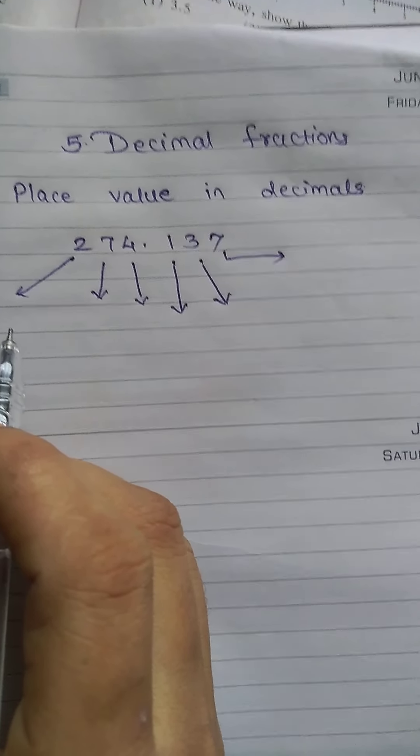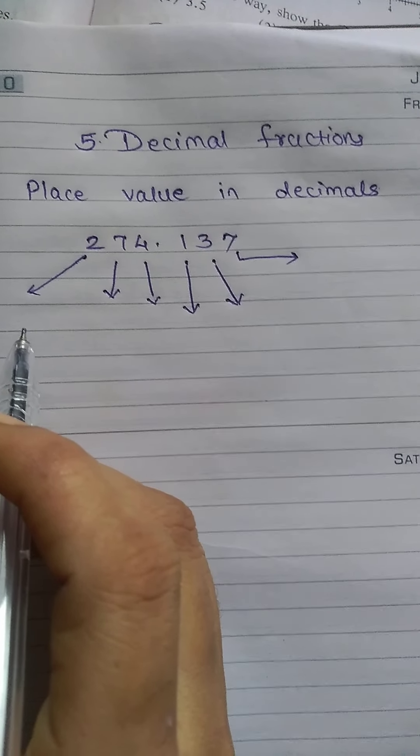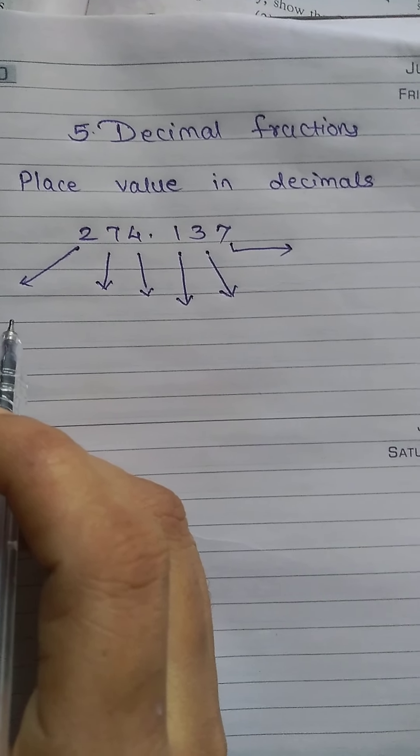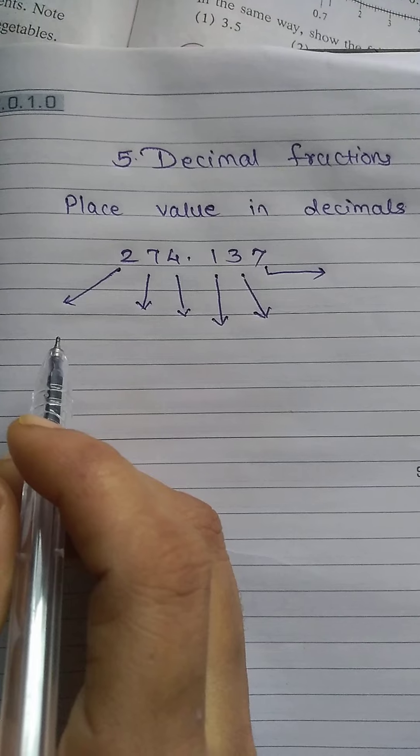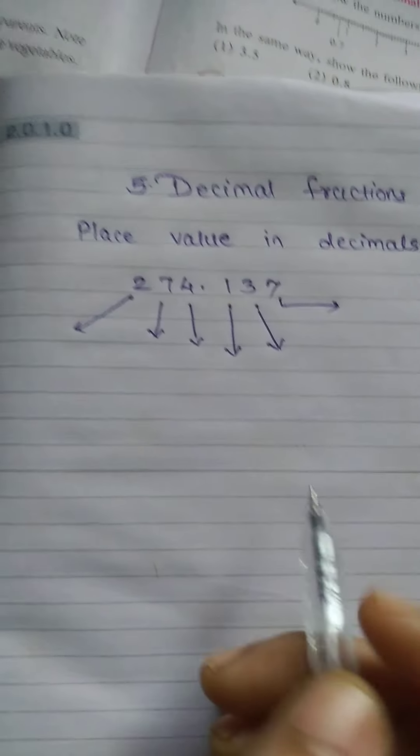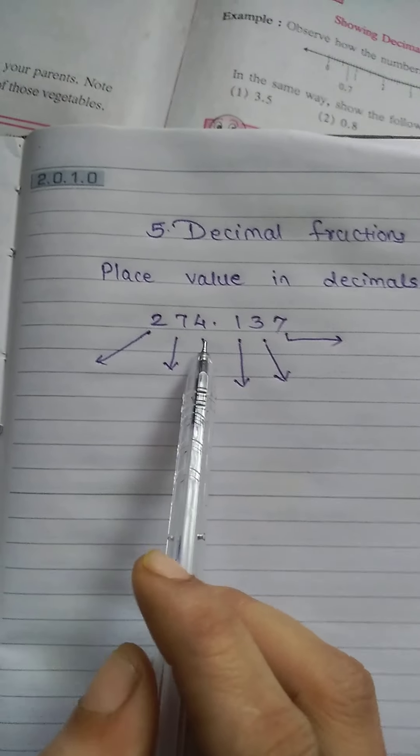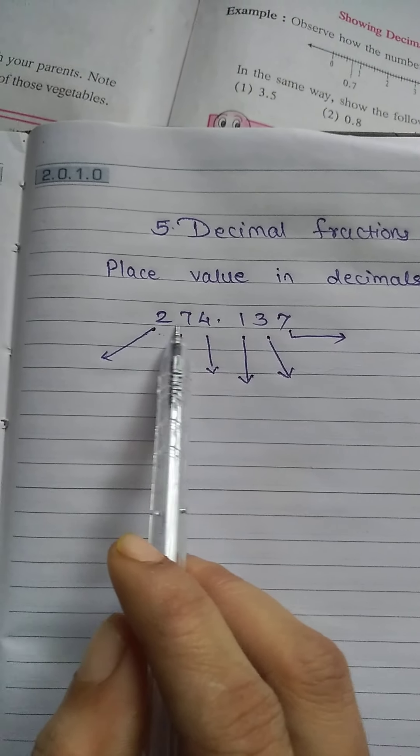Today we are going to start with lesson number 5, decimal fractions. In this lesson you will be taught about how to add decimal numbers as well as subtraction of decimal numbers. Before that, one point is about the place values in decimals. In a regular number you can write the place value - units, tens, and hundreds - but what to do if you have a number in decimal form?